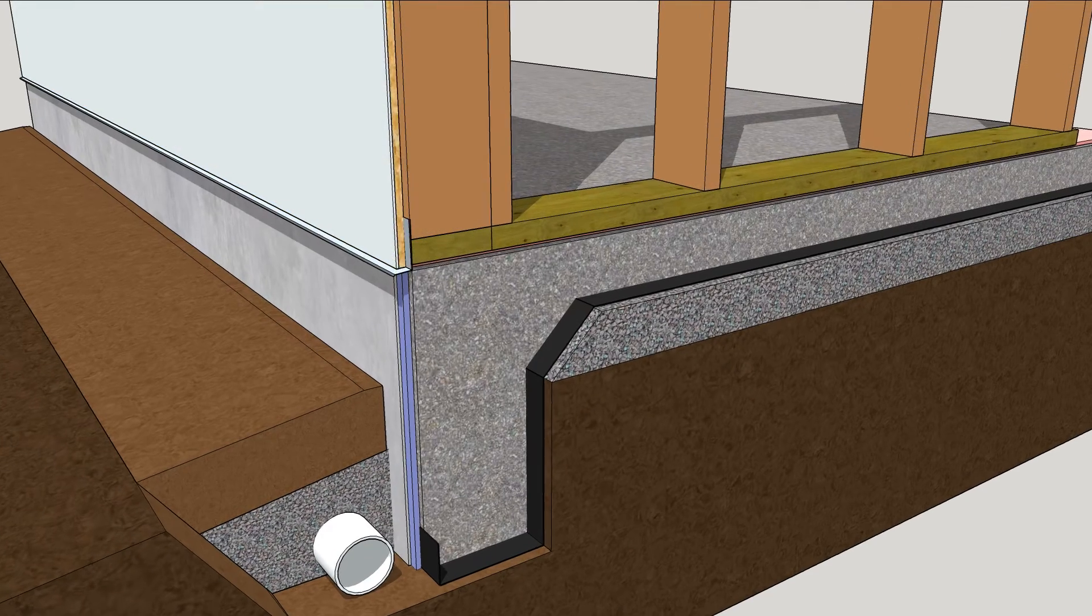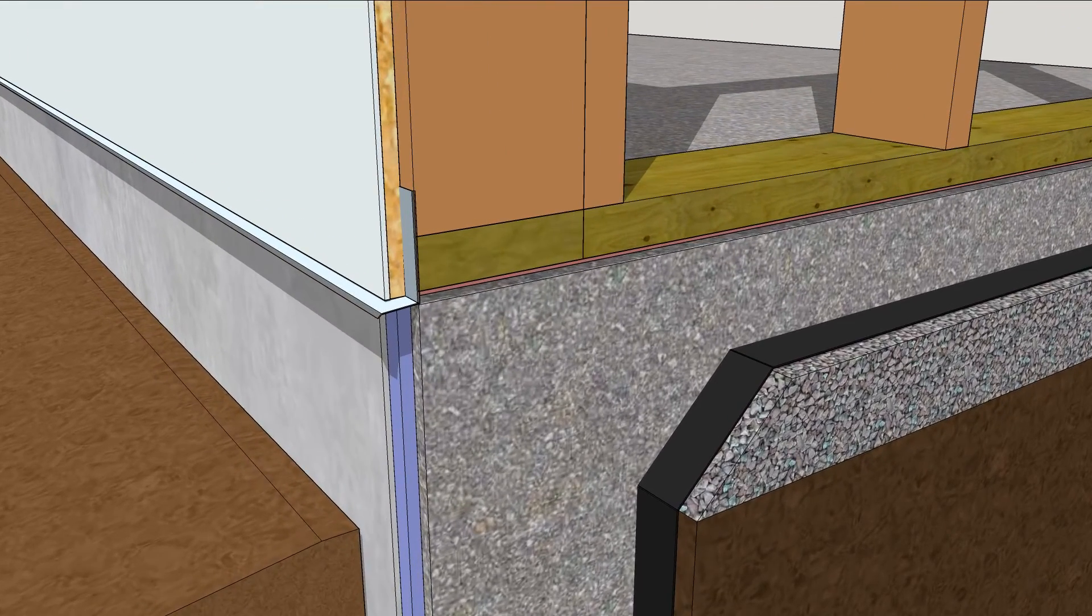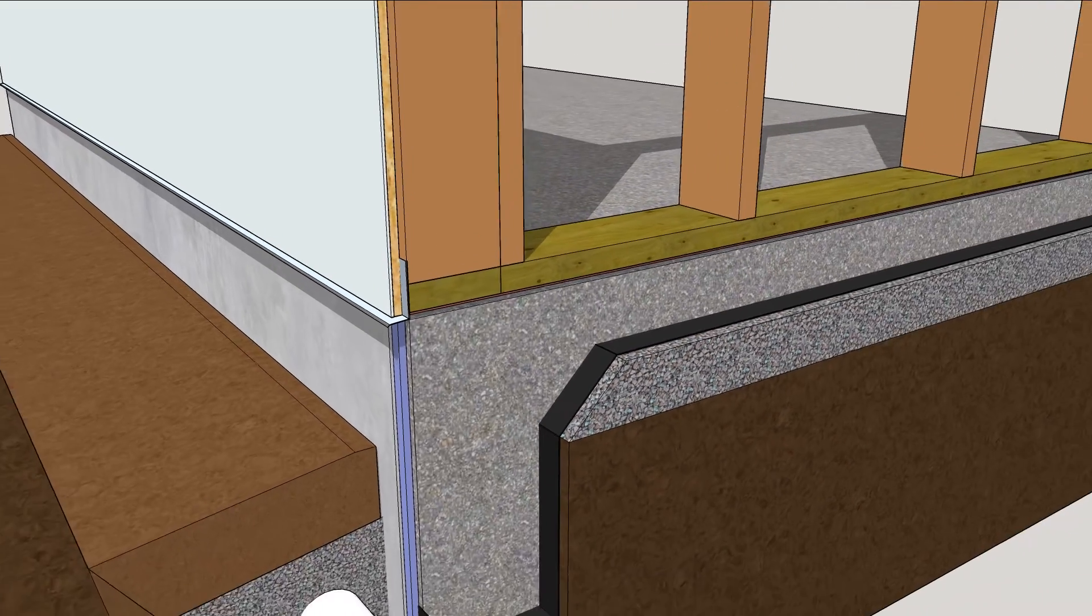A piece of flashing above the insulation keeps water from seeping its way in behind the insulation and plastic.